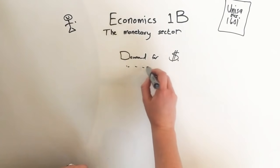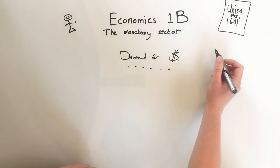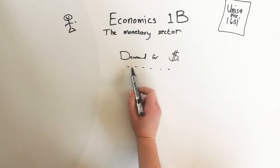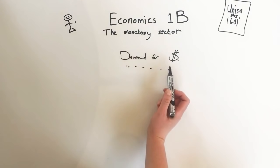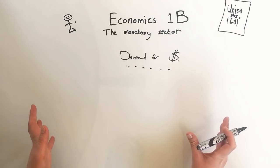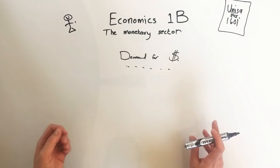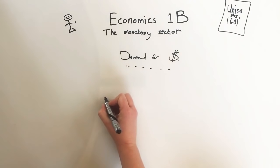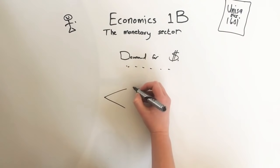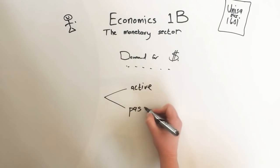So the demand for money — this is not about how much cash you want. It's about the bigger picture of how much money is around. There are two reasons to keep money: the demand for active balances and the demand for passive balances.